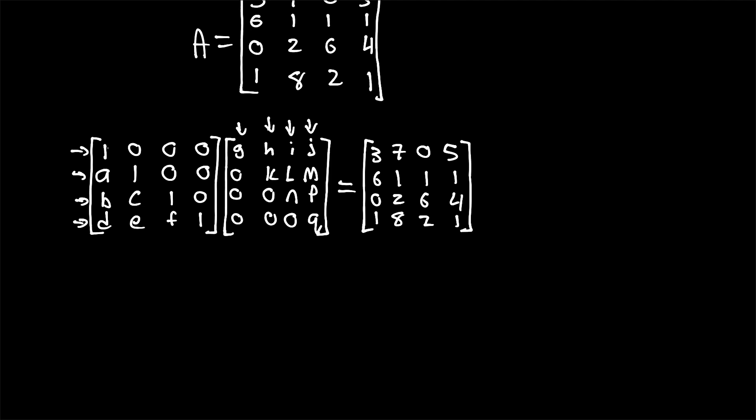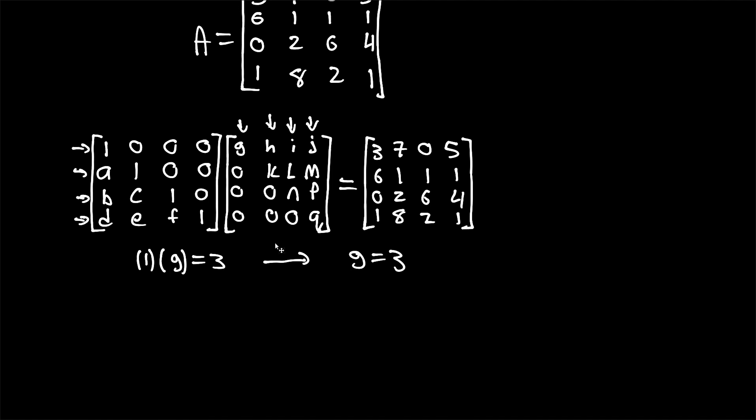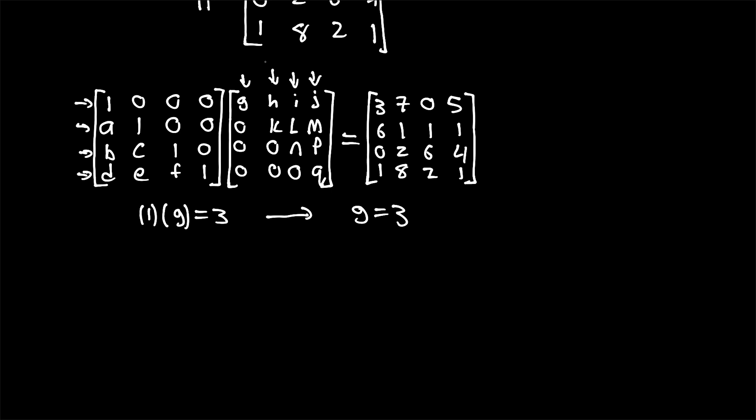Let's get started here. First, we're going to be taking a look at the first row and the first column. So that means that 1 times G equals 3. Therefore, G equals 3. We've solved the first unknown in our upper matrix.